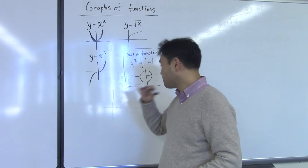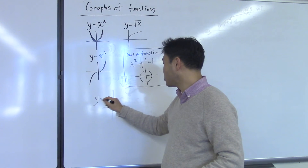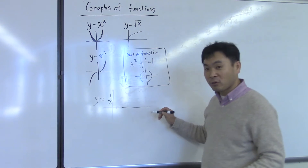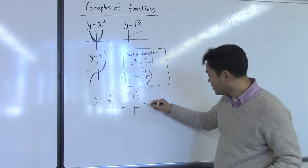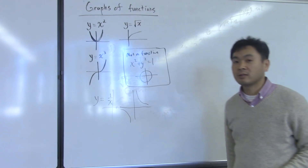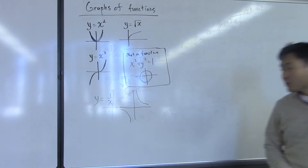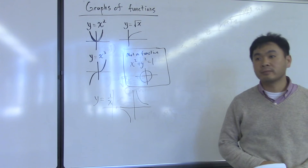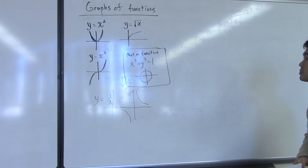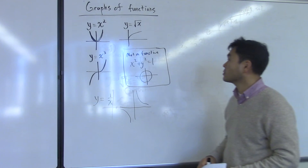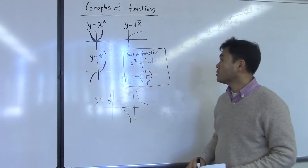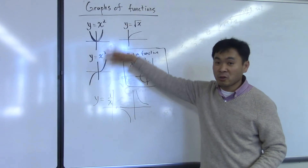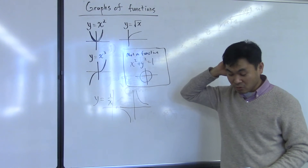Then you have y equals one over x, the simplest rational function, which looks like this. Geometrically, the name for this curve is hyperbola.